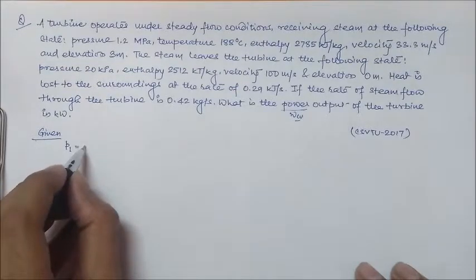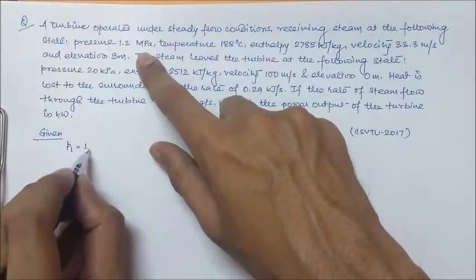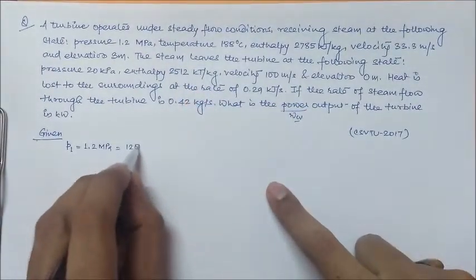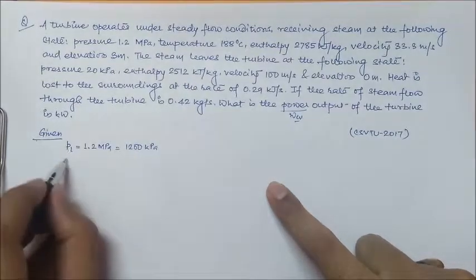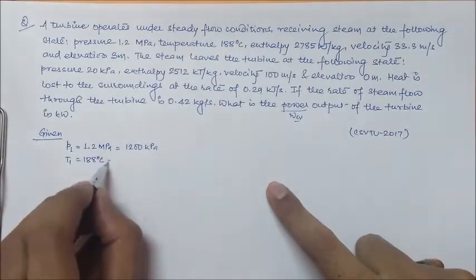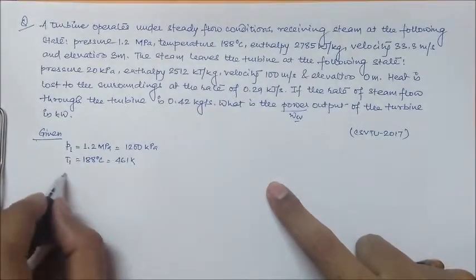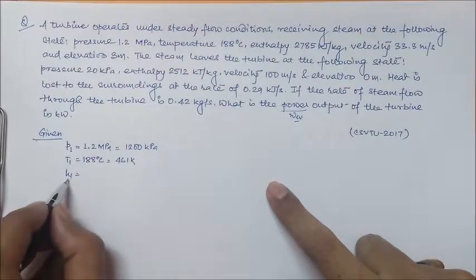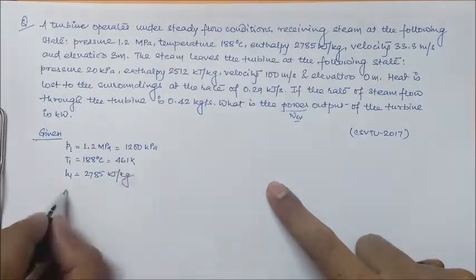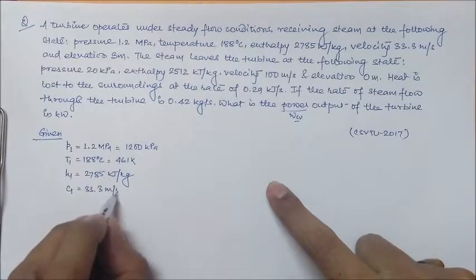P1, your inlet receiving pressure, is 1.2 megapascal, or it can be written as 1200 kilopascal. Temperature T1 is 188 degrees Celsius, that can be converted into Kelvin as 461 Kelvin. Your H1 is specific enthalpy, right, 2785 kilojoule per kg. Velocity C1 is 33.3 meter per second.